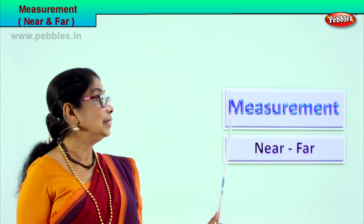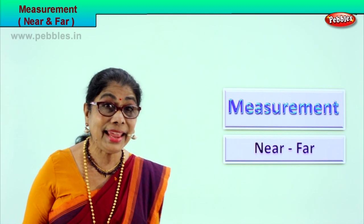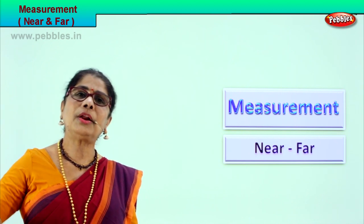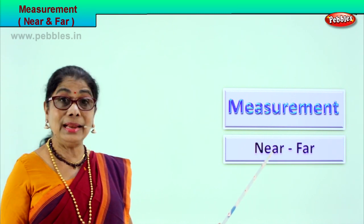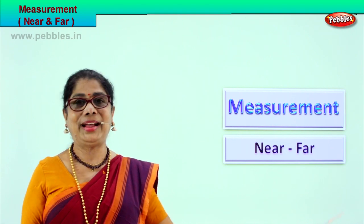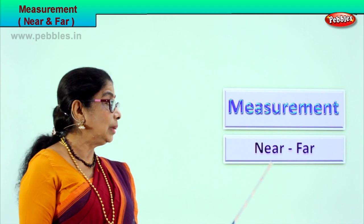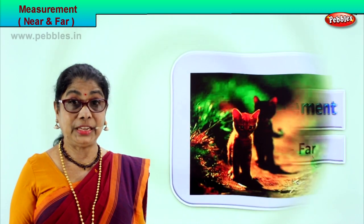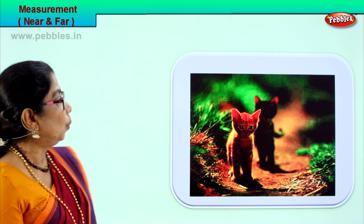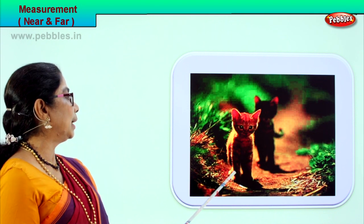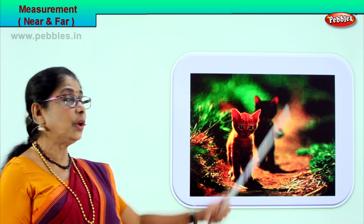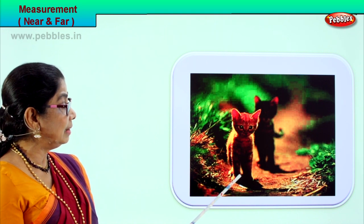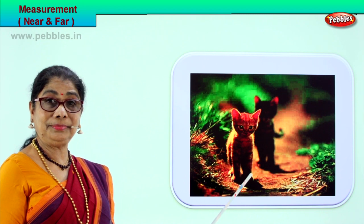Hi children, let us learn two other measurements - near and far. Near is what is close by, what you can see, and something far away. We look at the picture and try to understand what is near and what is far away. Here is a little pussycat close by, and there is another pussycat far away. So this is near and this is far.